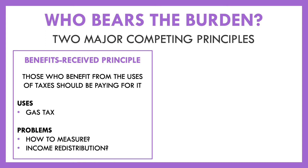There are problems with the benefits received principle. First, how do you measure the benefits people receive? If tax money goes toward parks, how do you know how much time someone spends there? Someone may never have needed police or fire services, yet their taxes pay for those. Also, the idea breaks down with income redistribution — people who need healthcare paid for can't afford it, so expecting them to pay more in taxes to fund it defeats the purpose.